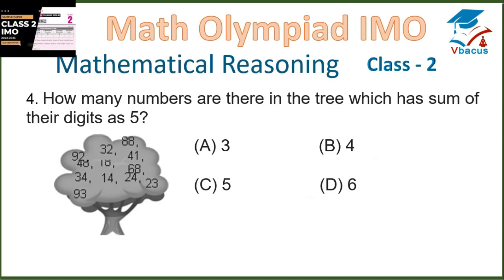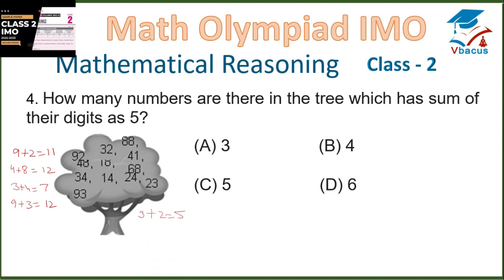Question 4: Mathematical reasoning. How many numbers are there in the tree which have a sum of their digits equal to 5? We count the digit sums column by column. First column: 9+2=11, 4+8=12, 3+4=7, 9+3=12. Next column: 3+2=5, 1+8=9, 1+4=5.